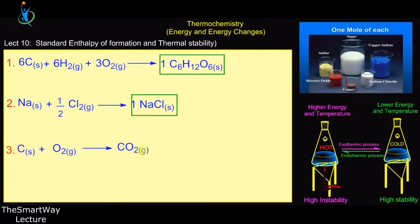The last example is the formation of carbon dioxide. There are two basic elements: carbon, which exists as a solid, and oxygen, which exists as a gas at room temperature. So when you form one mole of carbon dioxide from its definite elements, you have what is called the standard enthalpy of formation.